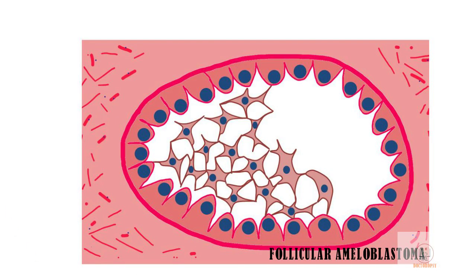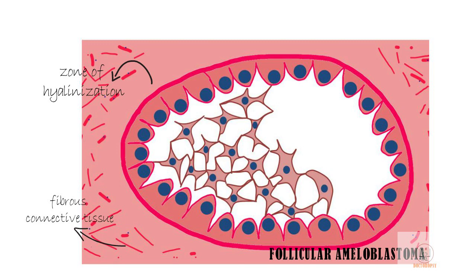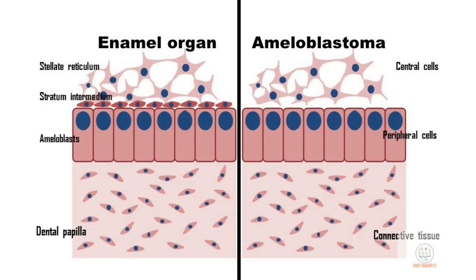Focally in many ameloblastomas, the collagenous fibrous connective tissue stroma may show a zone of hyalinization of collagen immediately adjacent to the tumor islands. Fibroblasts are almost totally absent within this zone. This hyalinization is due to the inductive effect of the epithelial component.